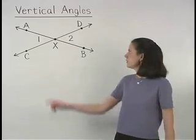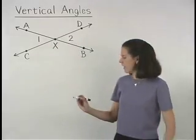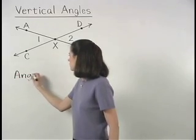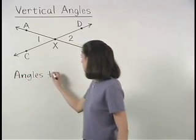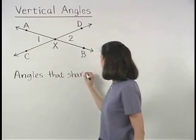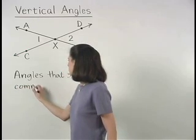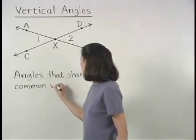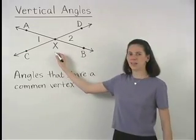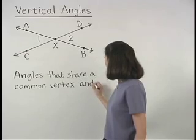Vertical angles, such as angles 1 and 2, can be defined as angles that share a common vertex, in this case x, and whose sides form opposite rays.